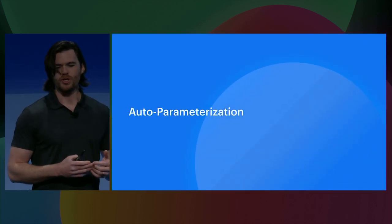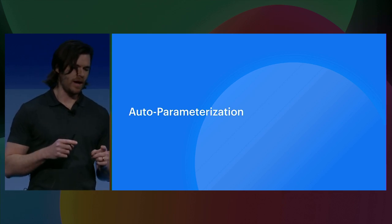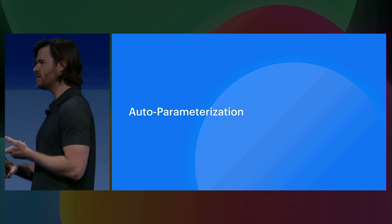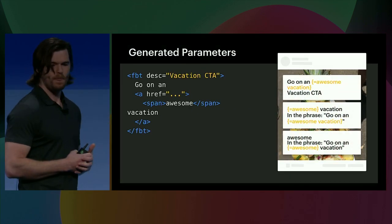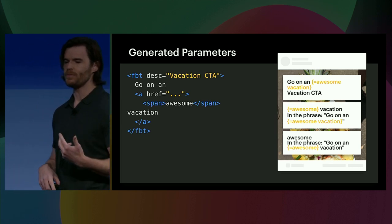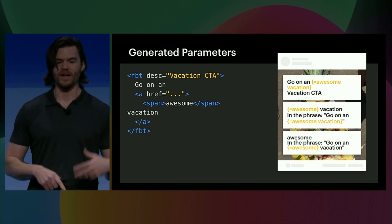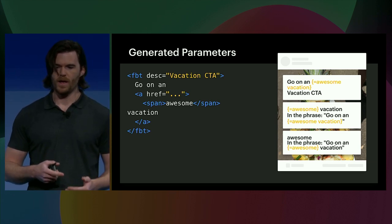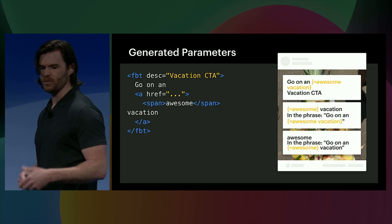In our first example, we showed how we could include markup for our button in an FBT param. But the framework actually allows us to inline our markup wrapped in FBT existing inline in FBT. The code is then transpiled such that the tokens and the descriptions have their text verbatim inserted during extraction. Here we have a link wrapped in an FBT and in that link a span. This example generates three separate strings: the outer string 'Go on an awesome vacation,' 'awesome vacation,' and the innermost string 'awesome.' The descriptions for these strings are also generated for translators verbatim, saving the engineer from writing boilerplate while giving the translator more context for the precise text they're translating.